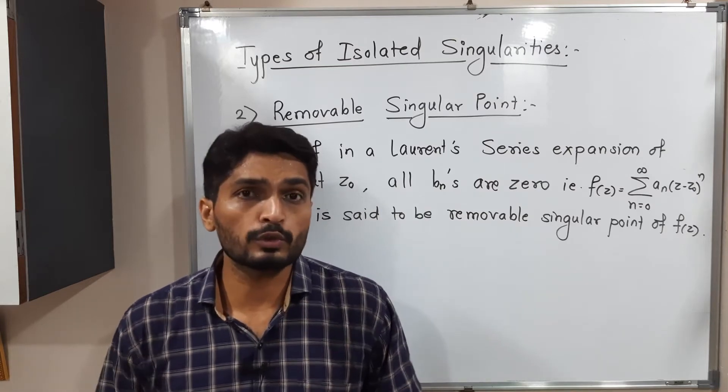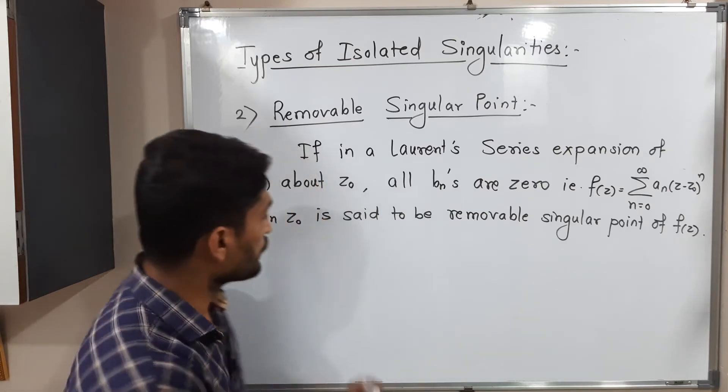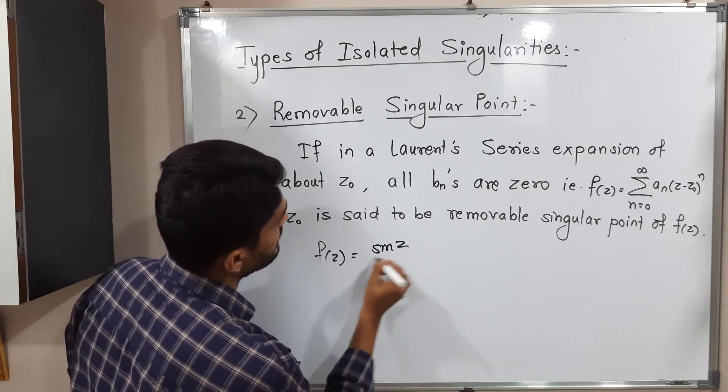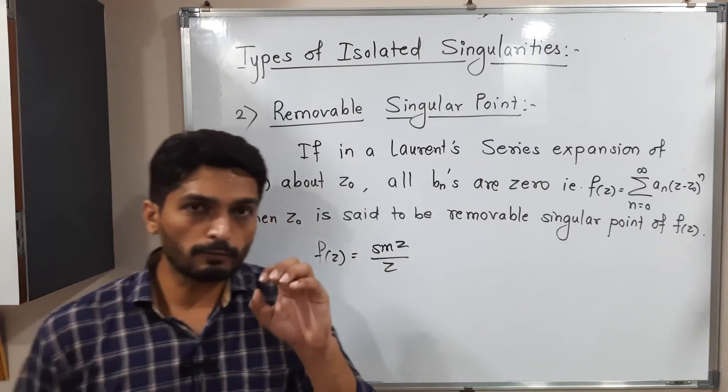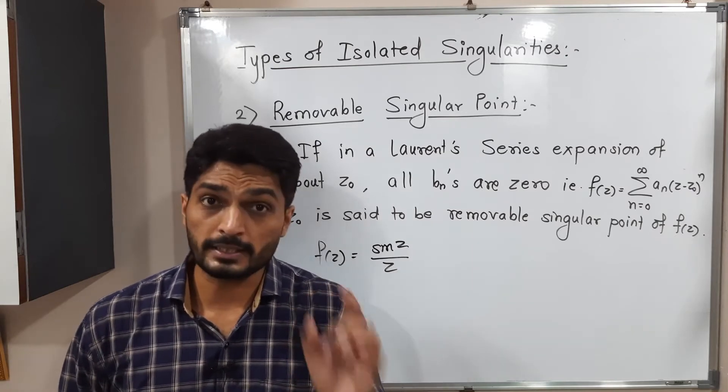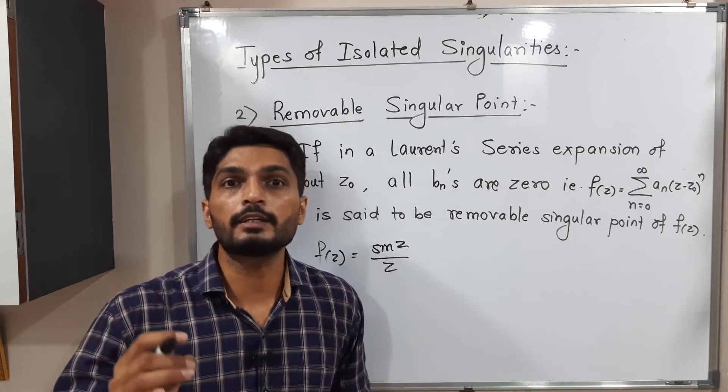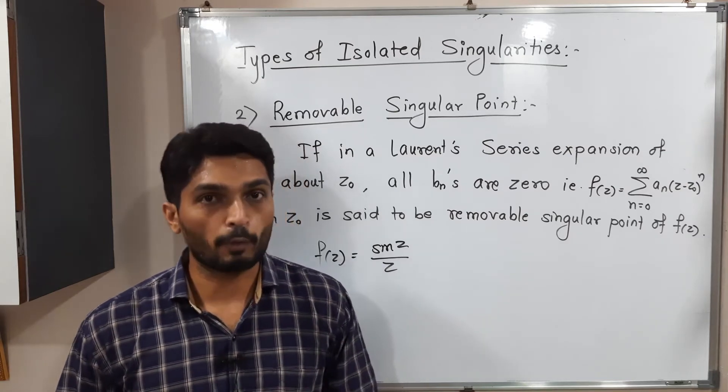Let us discuss one example so the concept will be clear. I will consider this function: f(z) = sin z / z. If you observe this function, the denominator is z. If I put z = 0, the denominator will be 0, so obviously z = 0 is a singular point.